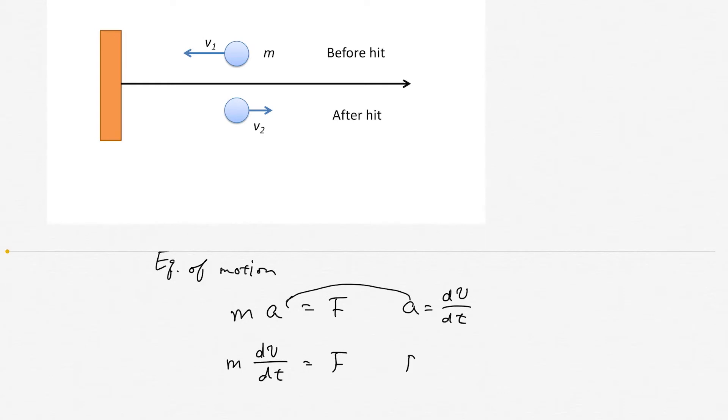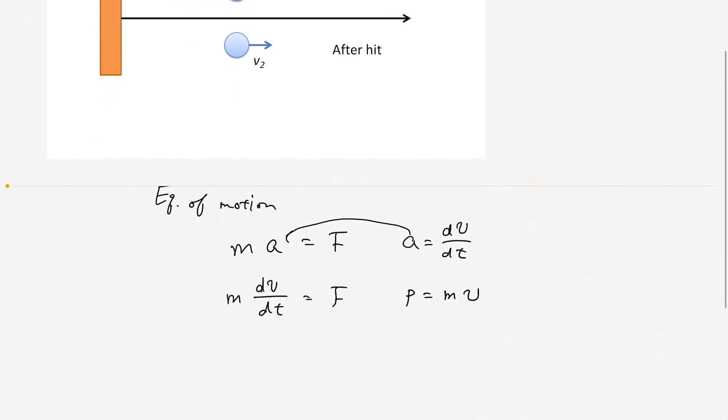And also we'd like to introduce the momentum, defined as mv. M is a constant, so you can express the equation of motion as dp/dt equal F. This is another form of the equation of motion.